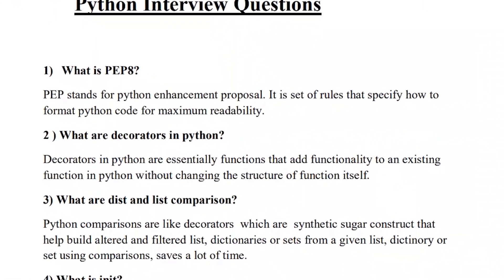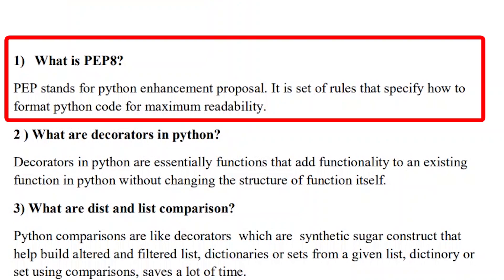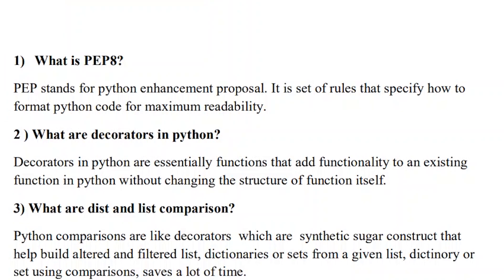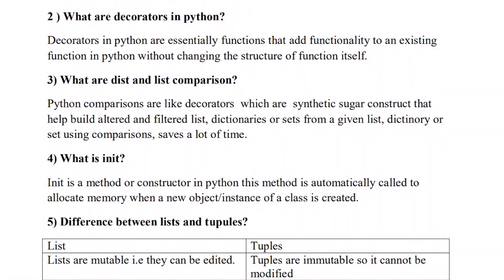The first question is: what is PEP 8? PEP stands for Python Enhancement Proposal. It is a set of rules that specify how to format Python code for maximum readability — it means how the developer can write beautiful code in a simple way. PEP 8 was officially written in 2001.